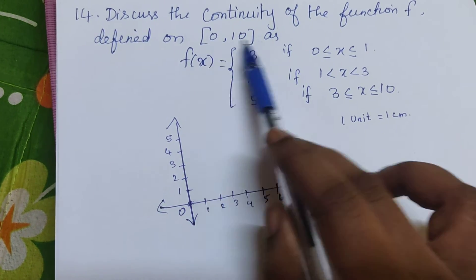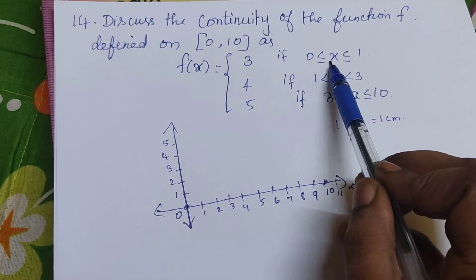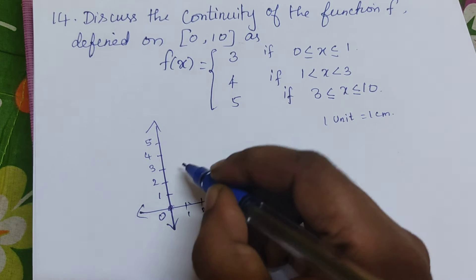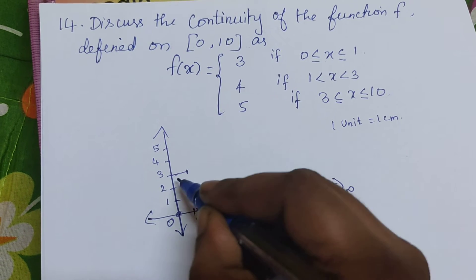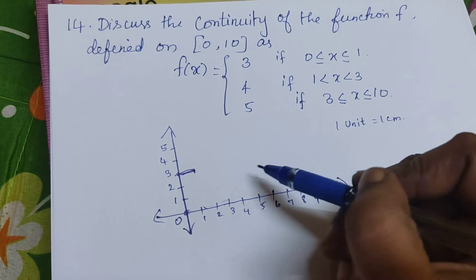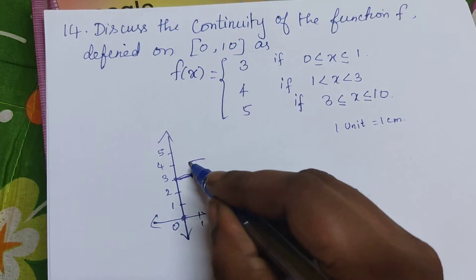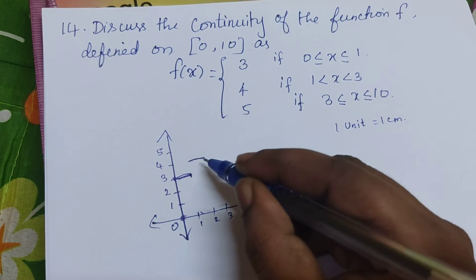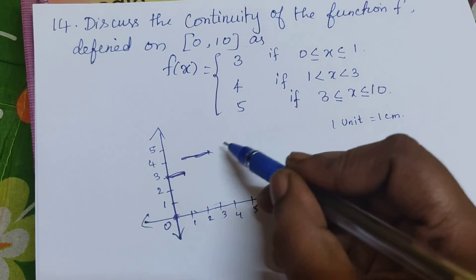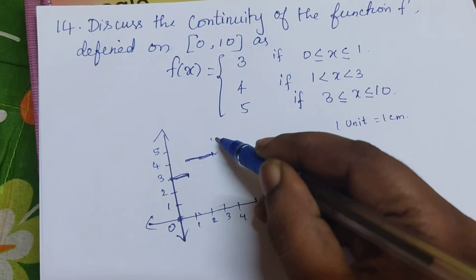When x belongs to the interval [0, 1], the function value will be 3. For values greater than 1 and less than 3, the function value will be 4. And when x is greater than or equal to 3 and less than or equal to 10, the function value will be 5.